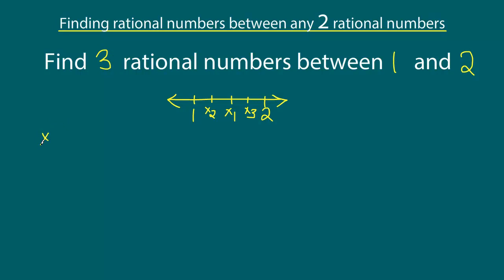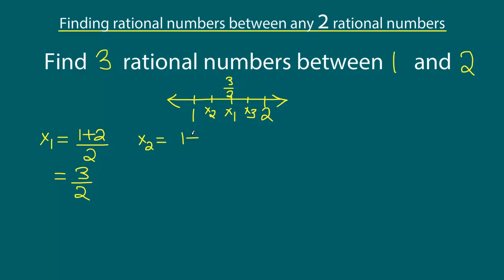So let's find x1. x1 will be the sum of the two numbers divided by two. It will be one plus two, divided by two, and this will simply be three over two. So the value of x1 is three over two, and we have found our first rational number. Now let's find x2. x2 is the average of one and x1, so x2 will be one plus three over two, the entire thing divided by two.